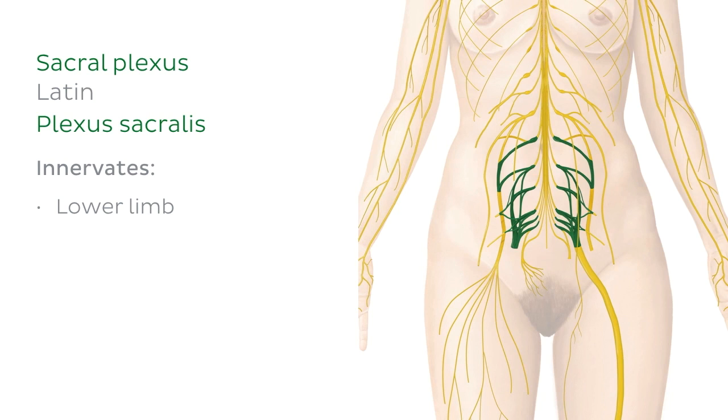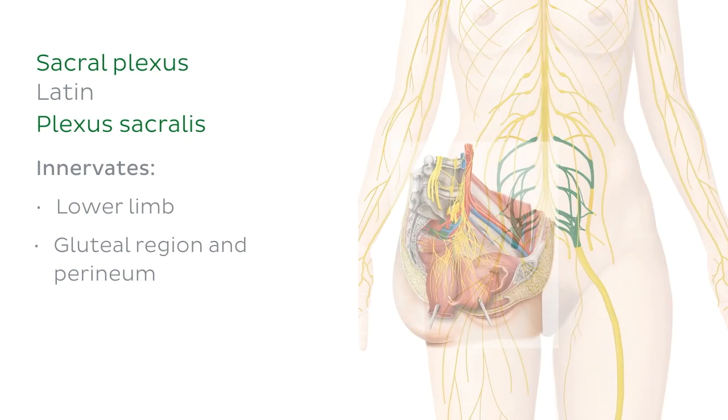The sacral plexus also innervates muscles of the gluteal region and the perineum, in addition to providing sensation to those areas as well.